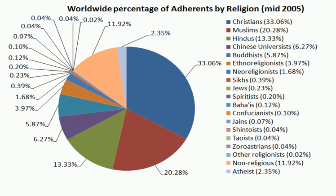Rural and devotional movements arose, along with Shaivism, Vaishnavism, Bhakti and Tantra, though sectarian groupings were only at the beginning of their development. Religious movements had to compete for recognition by the local lords. Buddhism lost its position and began to disappear in India.